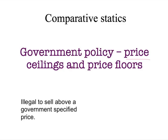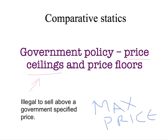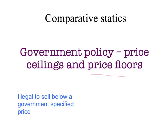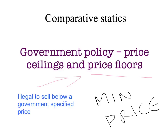First, let's start with a definition of a price ceiling. That's the situation where the government passes a law saying it's illegal to sell above a specified government price — a maximum price that people can sell the product for. They could sell at a lower price if they wish, but they can't sell above the ceiling. In contrast, a price floor is where the government sets a minimum legal price — it's legal to sell higher, but illegal to sell lower.